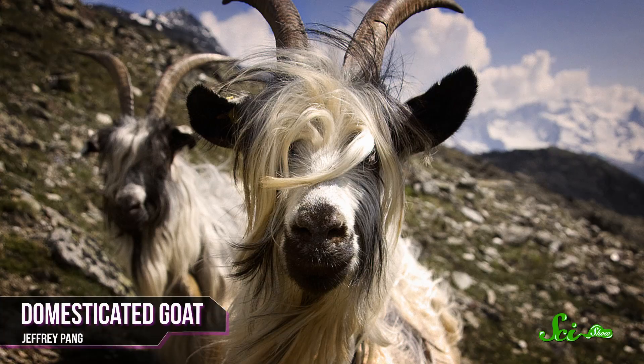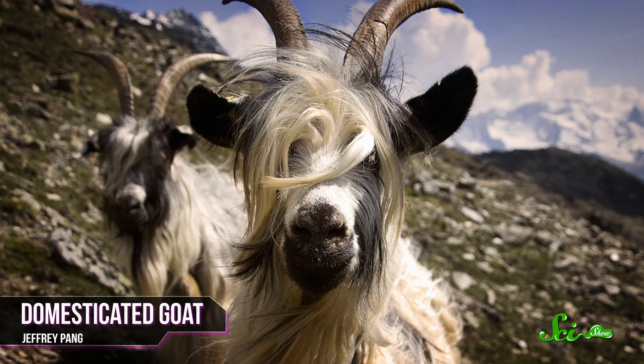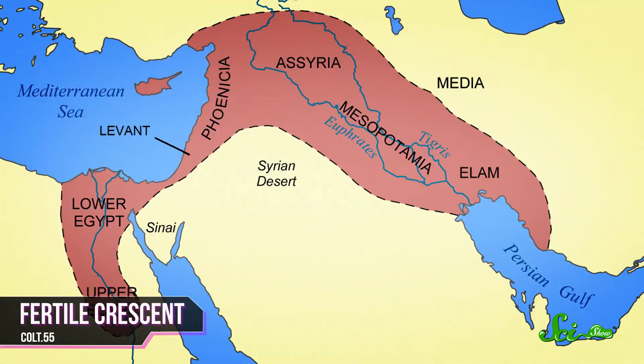Humans started to domesticate animals around 11,000 years ago in the Middle East, and traces of milk fat have been discovered on artifacts in the Fertile Crescent going back about 8,500 years ago, and into Central Europe around 7,000 years ago.